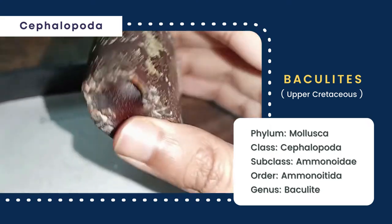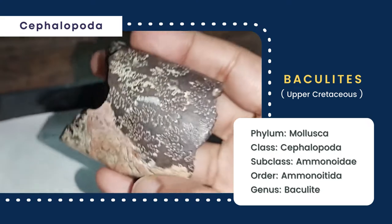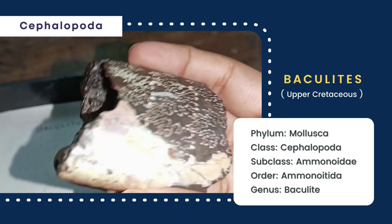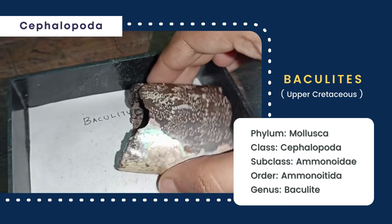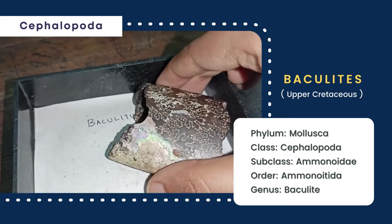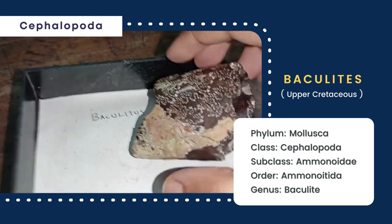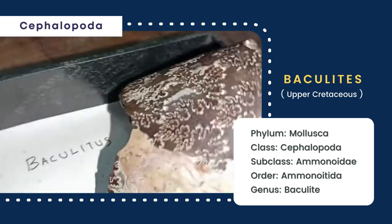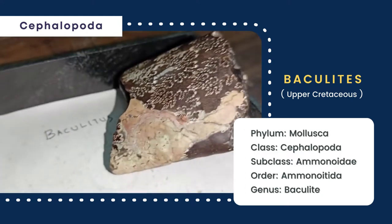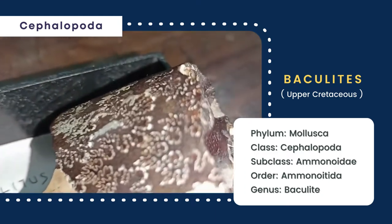The sutures have both distinctly visible saddles and lobes, which are wrinkled, giving rise to a dendritic appearance. The siphuncle is present near the external margin.